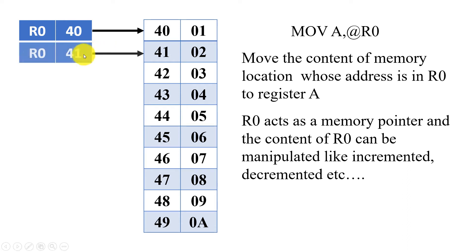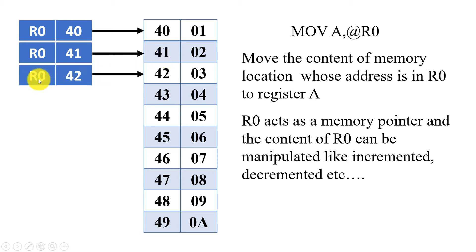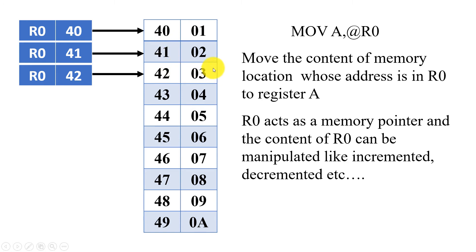If you further increment it, it will point to the next memory location, and so on. You can manipulate the value of the pointer to address different memory locations. Using different pointer values, you can address different memory locations and hence different data with the same instruction.